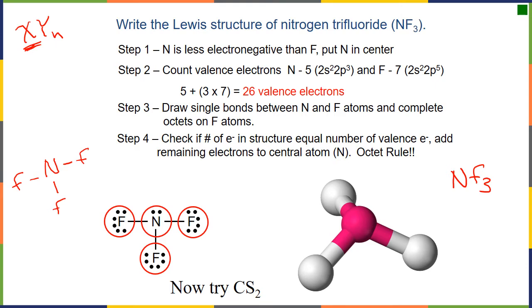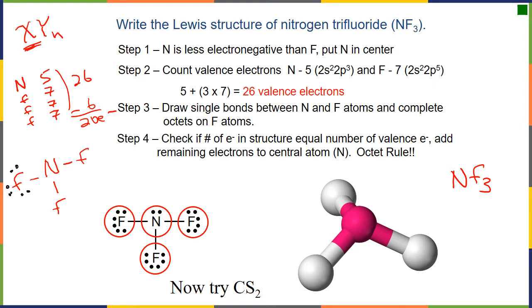Let's count valence electrons. Nitrogen is in group five so it has five. Each of the fluorines are in group seven, and we have three of them, so adding all electrons we get a total of 26. We have three single bonds, which uses six electrons, leaving 20 electrons. We start by putting them on the outside atoms — the fluorines — filling until we obey the octet rule.